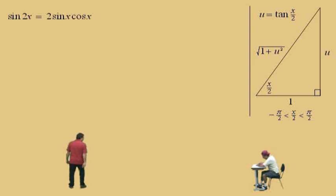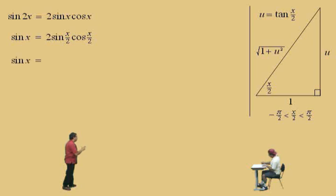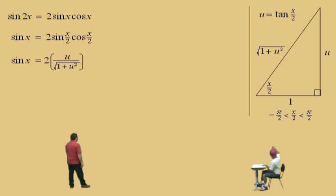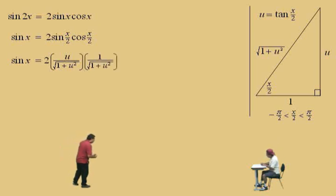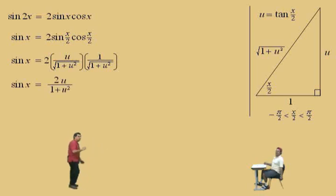Going back to our double angle result: sin x = 2 sin(x/2) cos(x/2). From the reference triangle, sine of x/2 is u over √(1+u²) — opposite over hypotenuse — and cosine of x/2 is 1 over √(1+u²). Multiplying: the numerator gives 2u and the denominator gives 1+u². So sine x equals 2u over (1+u²).